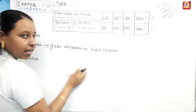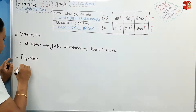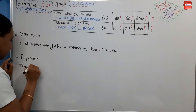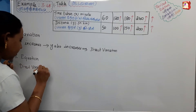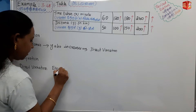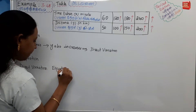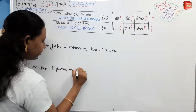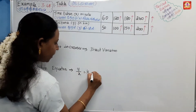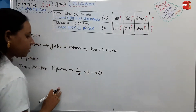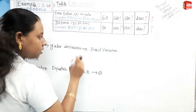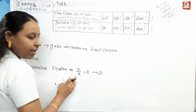Direct variation is the same. The direct variation equation is Y by X equals K. If we want to find the K value from the table, we can use the Y and X values.